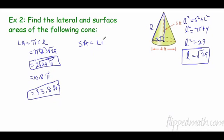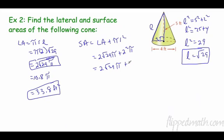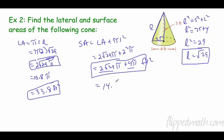For the surface area: lateral area plus πr². We have 2√29·π plus π(2²) = 2√29·π + 4π. That's the exact answer. Combining terms gives 14.8π feet squared approximately. Rounding to the nearest tenth, multiply 14.8 × π to get the final decimal answer.